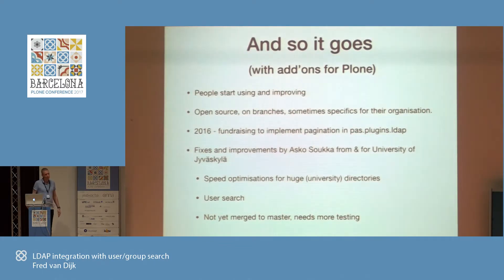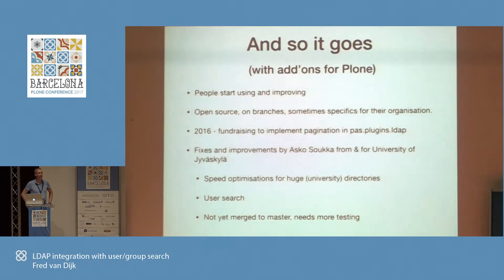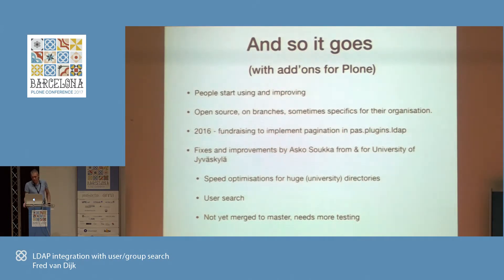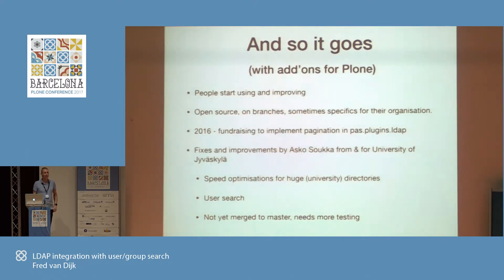When we have a new add-on in Plone, we start using it and improve it. There was a fundraising last year to improve PassPlugins LDAP — to add pagination support to query large amounts of users and groups. If you have a larger organization like a university or medium-sized company, you can get 5,000 to 50,000 objects. If you query an LDAP server asking for all users and get back 50,000 objects, things get very slow or you get no answer at all. So pagination was added last year. Some other people made more improvements — Asko Suka made improvements for his university, and we also improved user searching on the sharing tab.